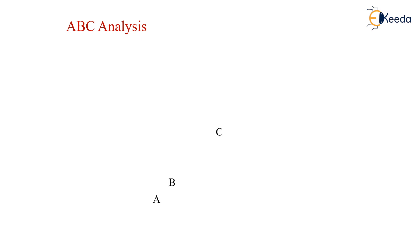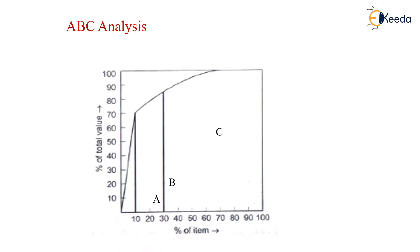Based on this, a graph is plotted between the percentage of items on the x-axis and the percentage of total value of items on the y-axis. From this graph we get the values for A, B, and C items, which we can see are divided into A, B, and C. Thank you.